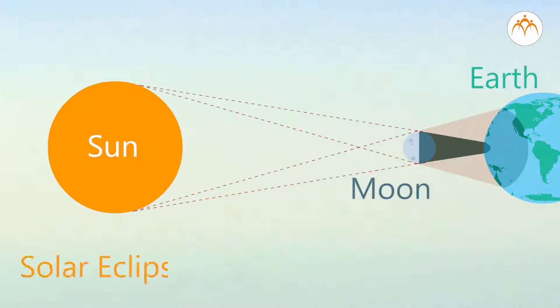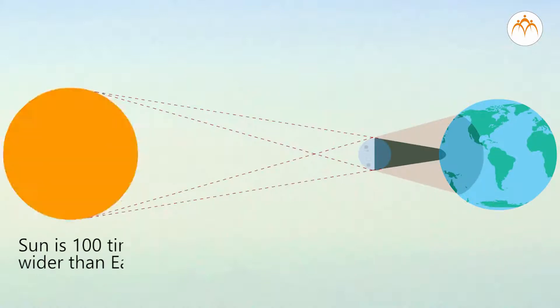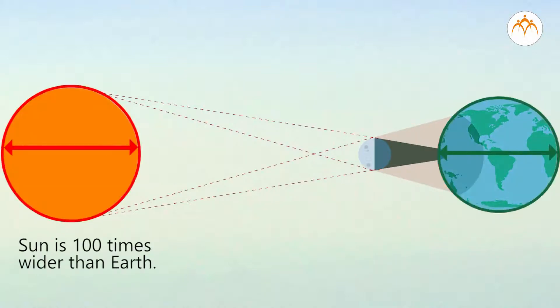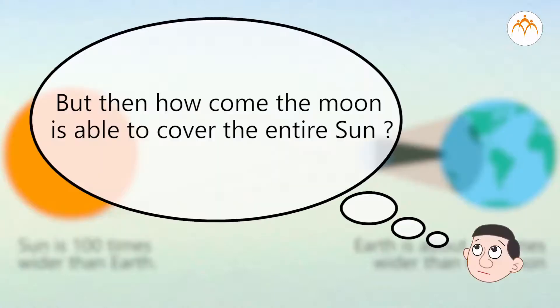When the earth is an obstacle, we see the lunar eclipse. The sun is 100 times wider than Earth. Earth is about 3.7 times wider than the moon. But then how come the moon is able to cover the entire sun?